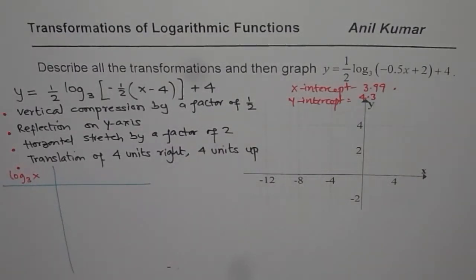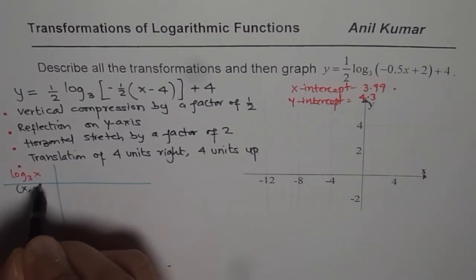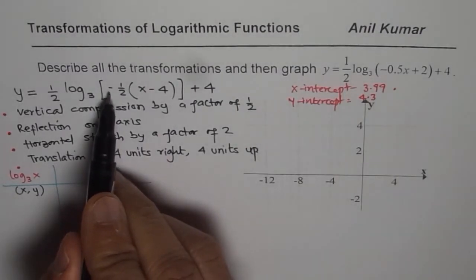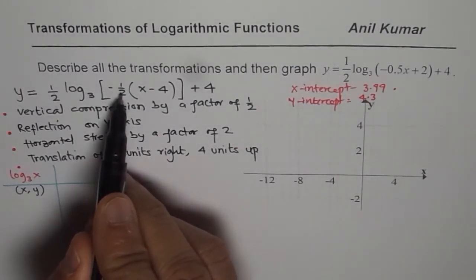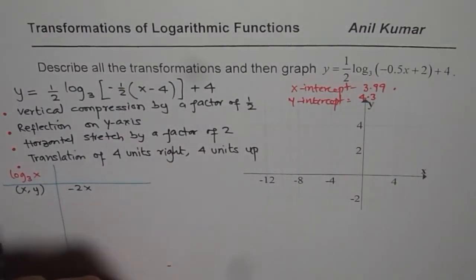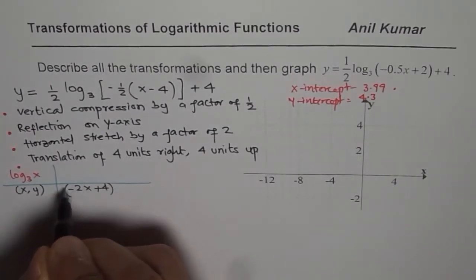Now in log base 3 of x, let us say the points are x and y. How are they getting transformed in this function? The x points are getting multiplied by negative since it is a reflection on y-axis and times 2. So we do negative 2 times x value and then you add 4. So that is how the x values get transformed.